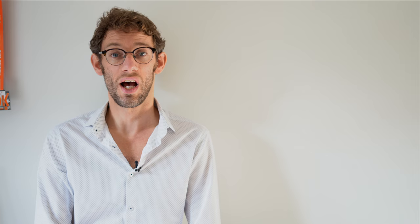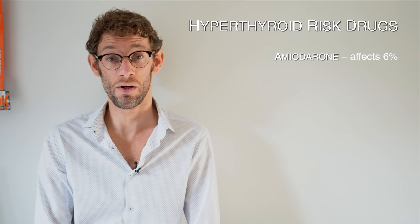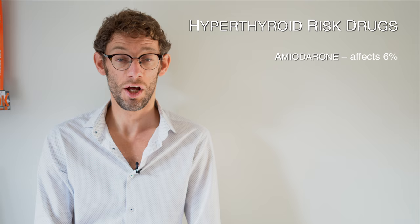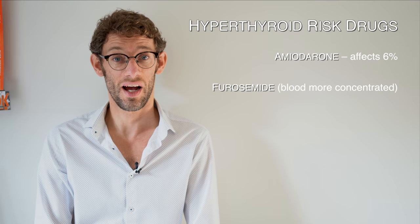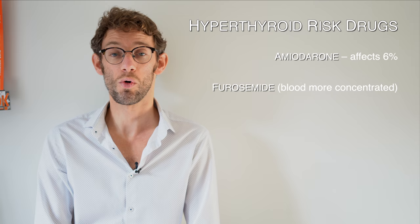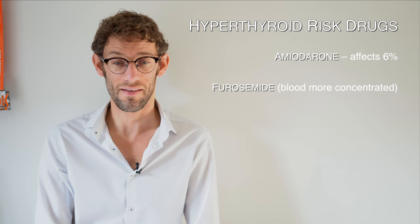Looking at drugs that can cause hyperthyroidism: surprisingly, amiodarone again — it can cause both hypo and hyperthyroidism, pushing the thyroid to become overactive in about six percent of people. Furosemide can theoretically cause hyperthyroidism: because it's a diuretic helping patients lose fluid, it can concentrate the blood, resulting in relatively more thyroxine than before.